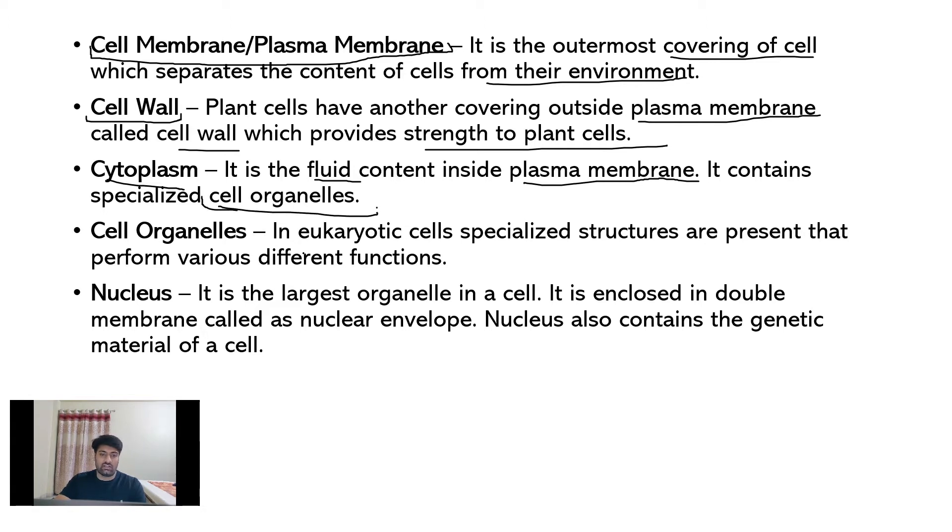Cell organelles in eukaryotic cells are specialized structures that are present that perform various different functions. Examples of some cell organelles are chloroplasts, mitochondria, Golgi apparatus, etc.